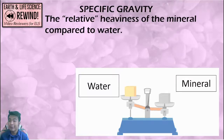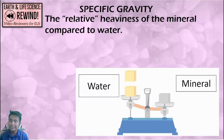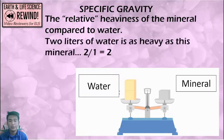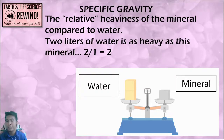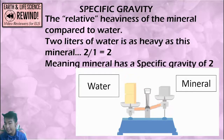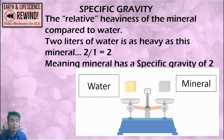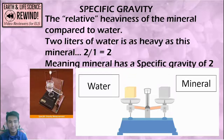Specific gravity is the relative heaviness of the mineral compared to its volume and water. For example, if it takes two liters of water to weigh the same as a mineral occupying one liter, then two divided by one equals two — so that mineral has a specific gravity of two, meaning it has twice the weight of water in the same volume. Specific gravity is important for mineralogists to verify if minerals are genuine.